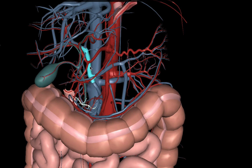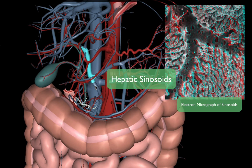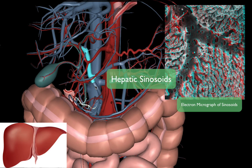The hepatic portal vein plays a really crucial role in emptying out the splenic vein and the superior mesenteric vein. It also receives blood from the cystic vein of the gallbladder.